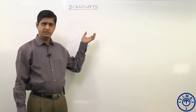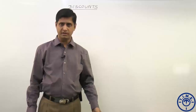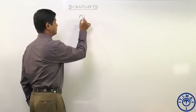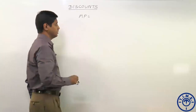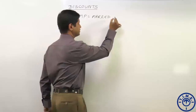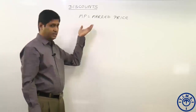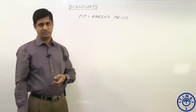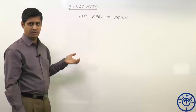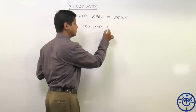In profit and loss, the subtopic is discounts. We will discuss what is a discount, who will offer a discount, how to find the discount, and the discount percentage. In discounts, the base price is called the marked price (MP). Marked price, tag price, list price, and labeled price all mean the same. This is the price fixed by the trader above its cost price. On this marked price, he will reduce some value — that value is called a discount. Discount means the difference between the marked price and the selling price.